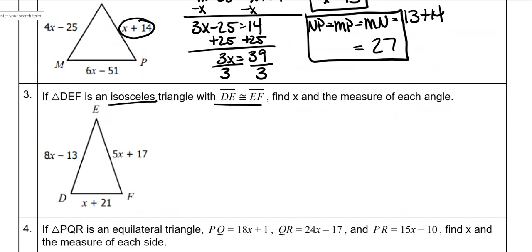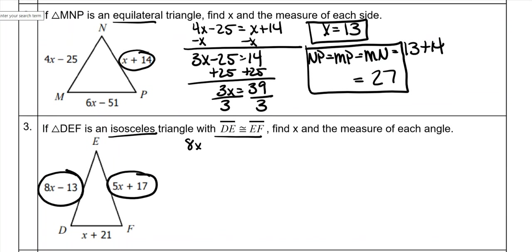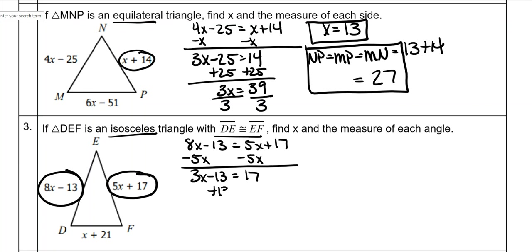Now this one says it's an isosceles, and specifically DE is congruent to EF. So DE is this side and EF is this side — those are the two you have to make equal to each other. On isosceles, you have to make sure it's the two sides that are actually equal. You cannot set the base equal to any of the other ones. Subtract 5x from both sides — 3x minus 13 equals 17. Add 13 to both sides — 3x equals 30. Divide by 3, and x is equal to 10.